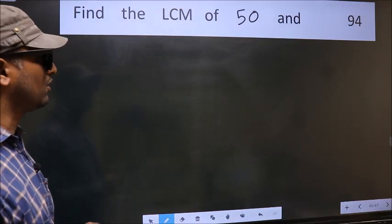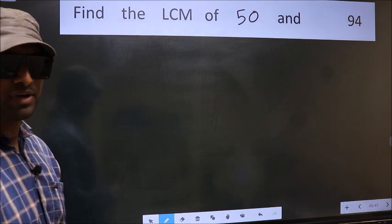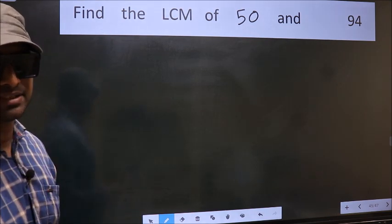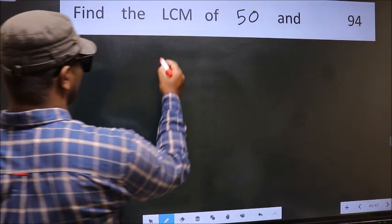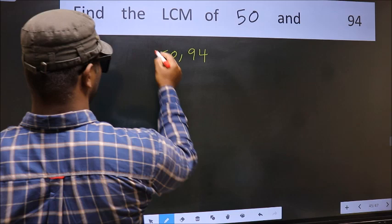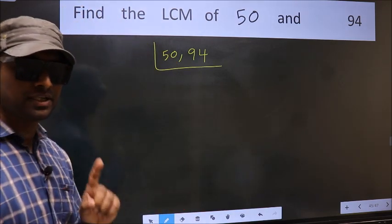Find the LCM of 50 and 94. To find the LCM, first we should frame it in this way. 50, 94. This is your step 1.